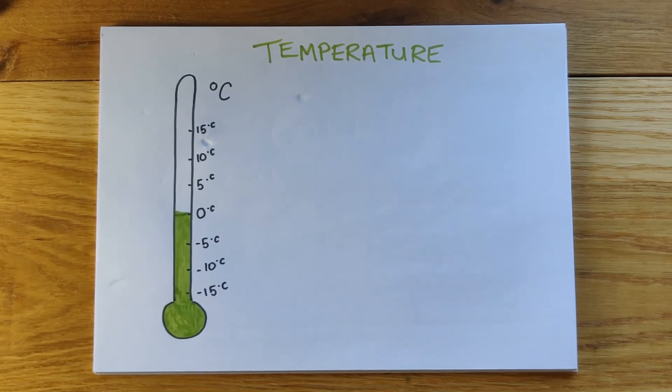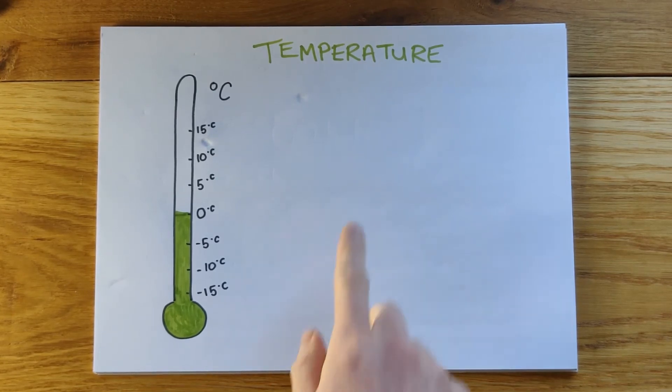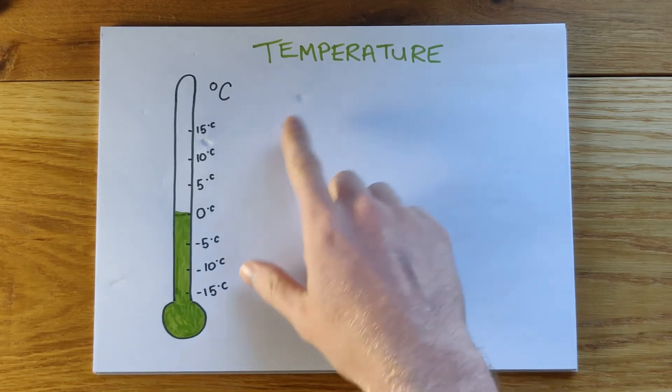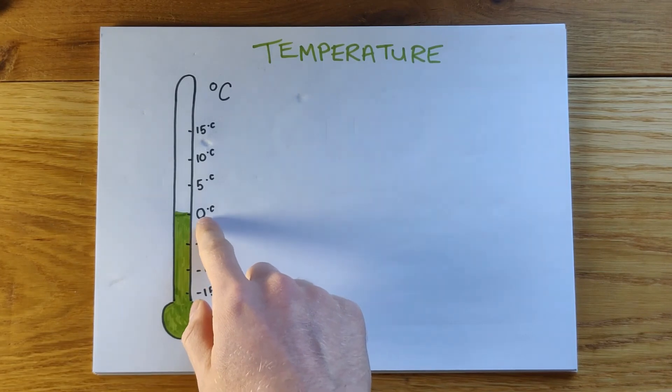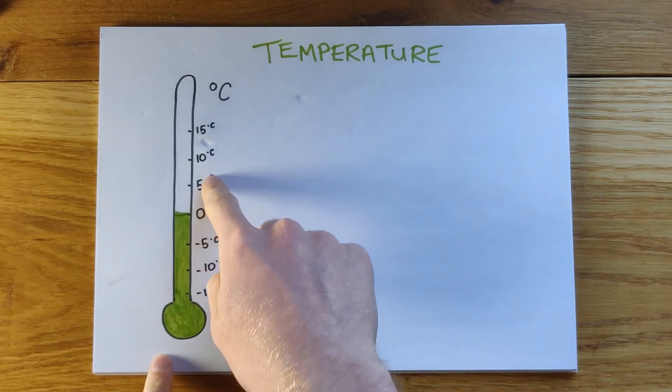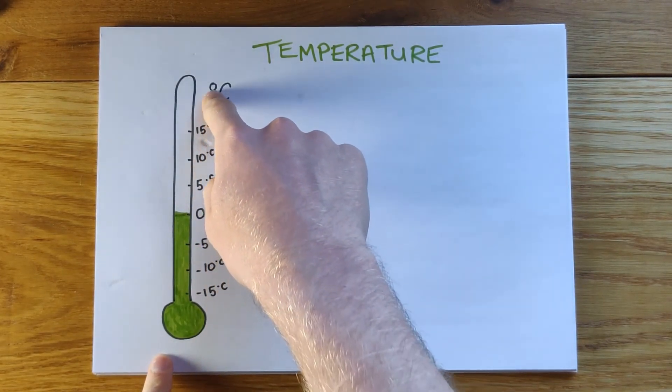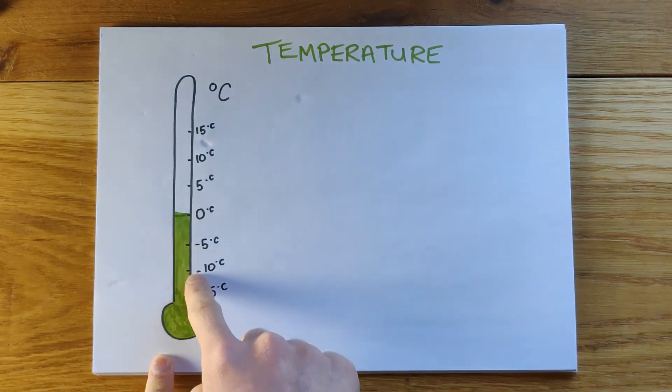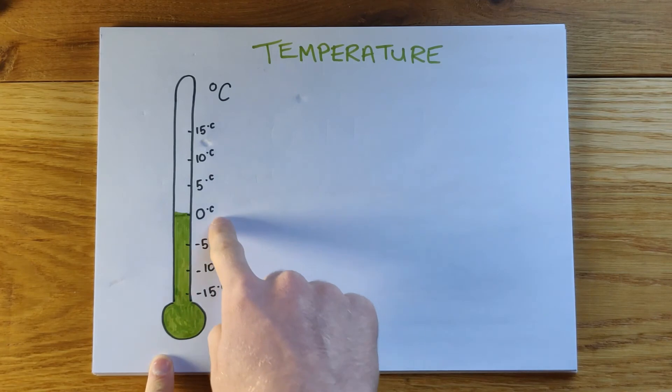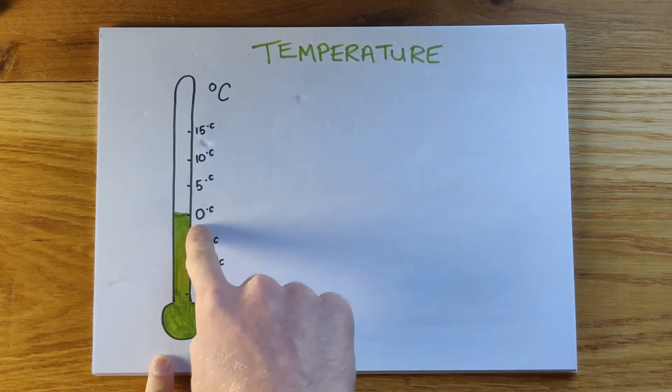Another time we want to use negative numbers is when we are dealing with temperature. On the left here, you can see a thermometer. It goes from zero, it goes up and shows all these temperatures above zero degrees Celsius. And it can also go down, showing all these numbers and temperatures that are below zero degrees Celsius.